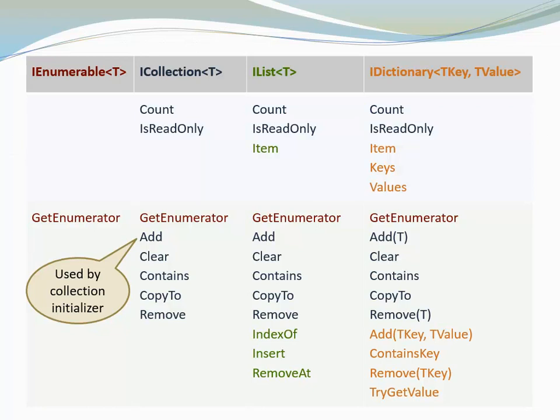The methods have pretty self-explanatory names, but let's have a brief look at the method Add. It has special importance because it is used by the collection initializer. If a collection implements the generic interface ICollection<T>, it has this Add method and it can be initialized with the collection initializer. Let's look at an example.